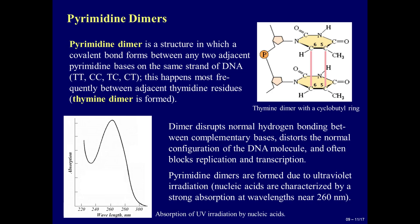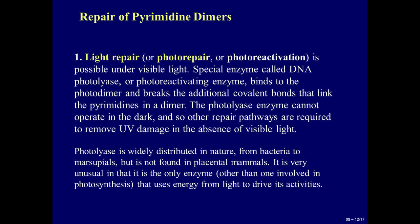Pyrimidine dimers are formed due to ultraviolet irradiation. Nucleic acids are characterized by strong absorption at wavelengths near 260 nm. In the picture to the left, we can see how DNA absorbs ultraviolet irradiation.